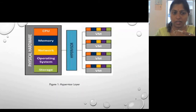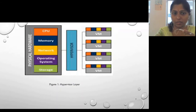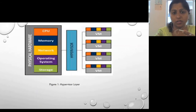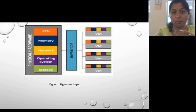The hypervisor layer creates virtual machines and allows you to share your processor, memory, and storage, as seen in the diagram. Here we have physical hardware — CPU, memory, network, operating system, and storage. The hypervisor layer sits above, and you share all your resources to a virtual machine. For example, if you have 500 GB of storage, you can give 100 GB to each virtual machine. You can use a VM whenever you want and shut it down; it remains on your physical machine.